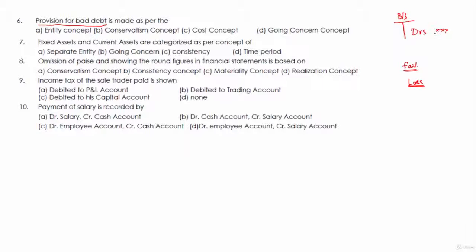You want to be very conservative when you prepare your financial statements — you don't want to carry the debtors at inflated numbers, because for all likelihood this value will come down due to failure of some customers, which eventually will be written off as bad debts. So rather than giving that shock to the readers of the financial statement when the event happens, we reduce the profit now itself by creating a provision for bad debts. That is done as per the conservatism concept. The answer is B.